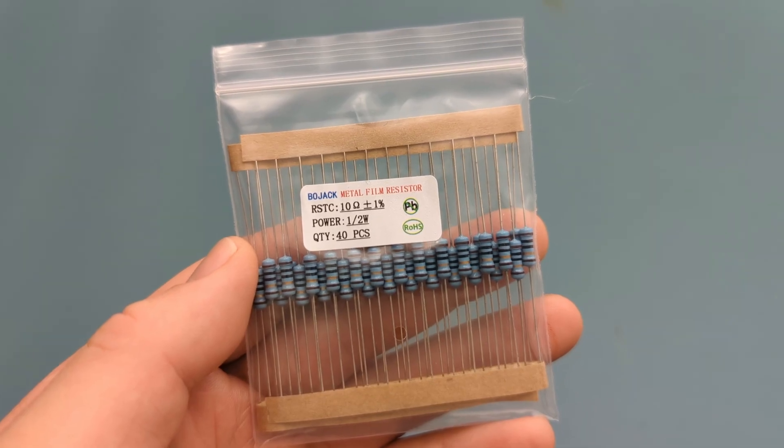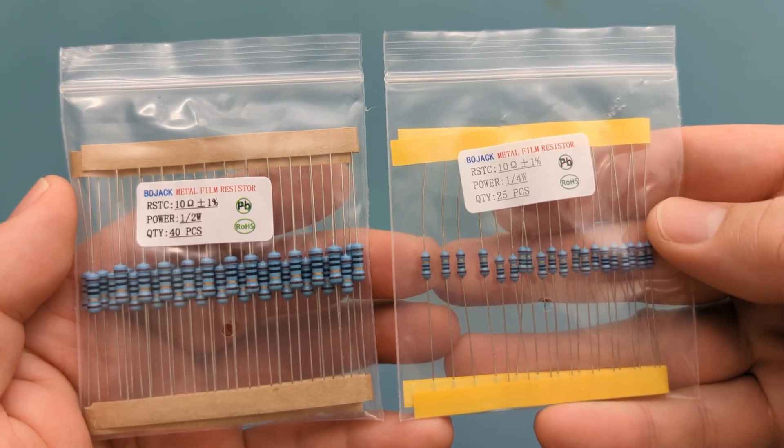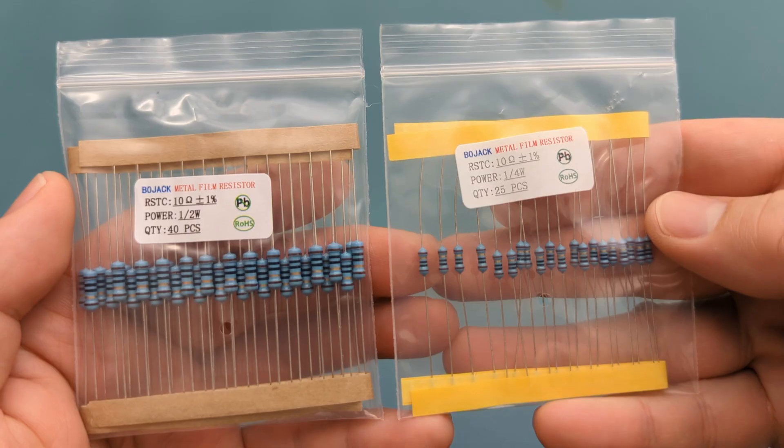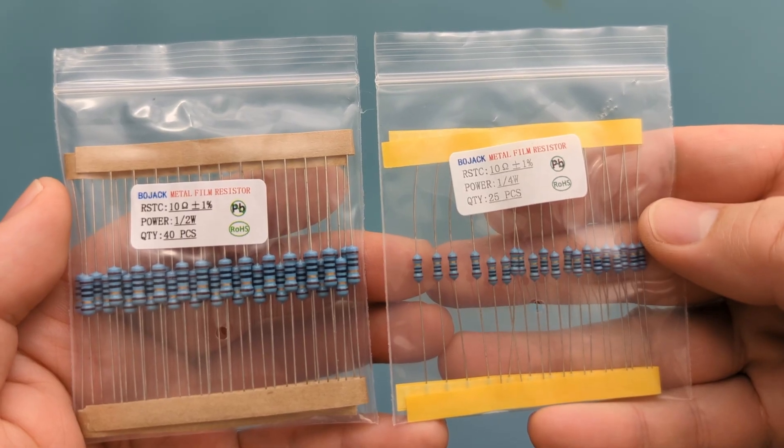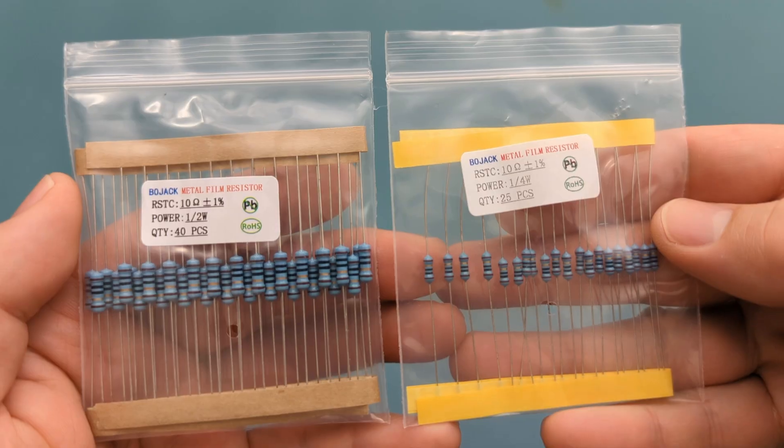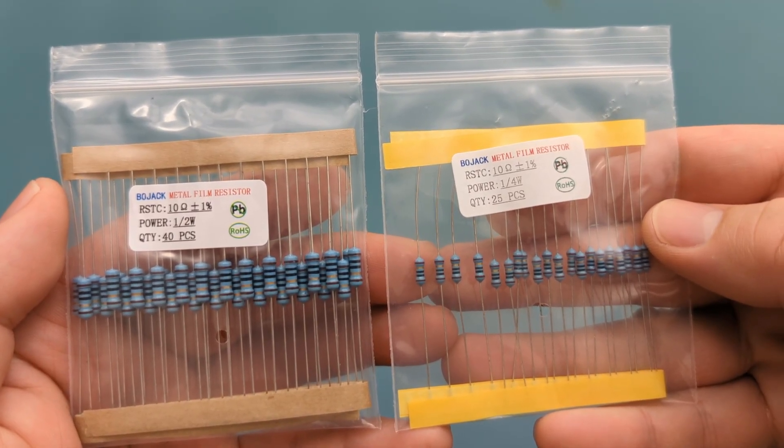These resistors are also 10 ohms, but they're rated for half a watt. A one-quarter watt resistor is smaller, so it has less surface area and higher thermal resistance. It warms up faster and runs hotter at the same power. A half-a-watt resistor is larger, spreads heat through more material, and can dissipate it to the air more easily so it stays much cooler under the same load.